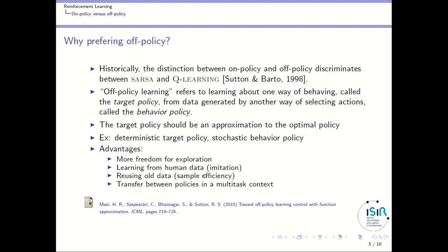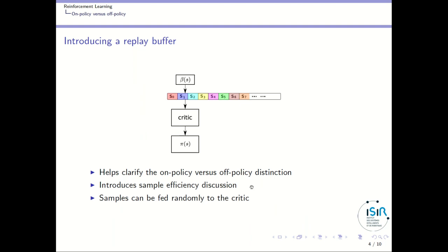Finally, being off-policy makes it easier to transfer between policies in a multitask context, because you can reuse data generated for training a particular policy to train a different policy for doing something else, which also improves sample efficiency and transfer between policies. To better understand the distinction between on-policy and off-policy, I will introduce the notion of a replay buffer, which will also be very useful when we move to deep reinforcement learning.